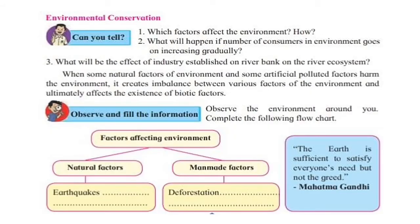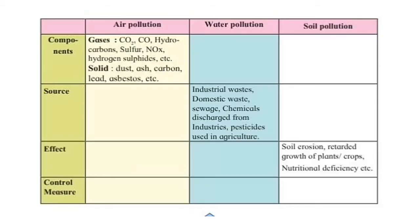In that chart, factors which are affecting the environment are natural factors and manmade factors. For example, earthquakes, and manmade deforestation and excess industrial development, are other factors. By the statement of Mahatma Gandhi: the earth is sufficient to satisfy everyone's need but not their greed. Air pollution, water pollution, and soil pollution are differentiated by the factors of component, sources, effects, and control measures.